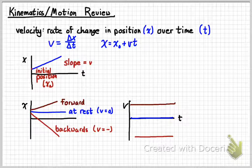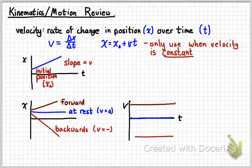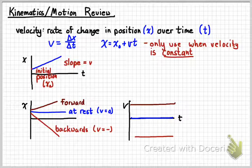On a velocity-time graph, those three cases would look accordingly. When the velocity is constant, the velocity-time graph will be a flat line. Be sure when solving problems that you only use these equations when you know the velocity is constant — if something is speeding up or slowing down, you can't use those relationships.